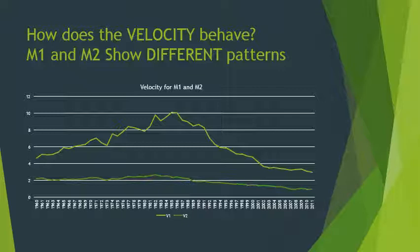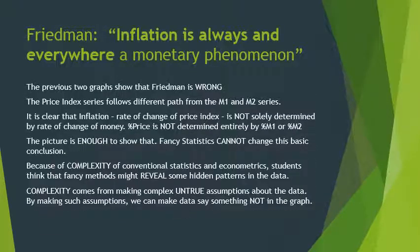This immediately means that any idea that velocity is constant or doesn't matter cannot be true — this picture is enough to reject the quantity theory. Friedman wrote the famous statement that 'inflation is always and everywhere a monetary phenomenon,' meaning the rise of prices can always be related to the rise in the quantity of money. These two graphs, where velocity is changing and the pattern of prices differs from the pattern of money, are enough to show that Friedman is wrong. Inflation is not determined by the rate of change of money.